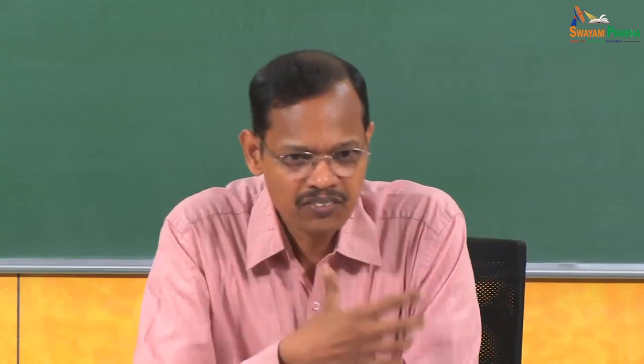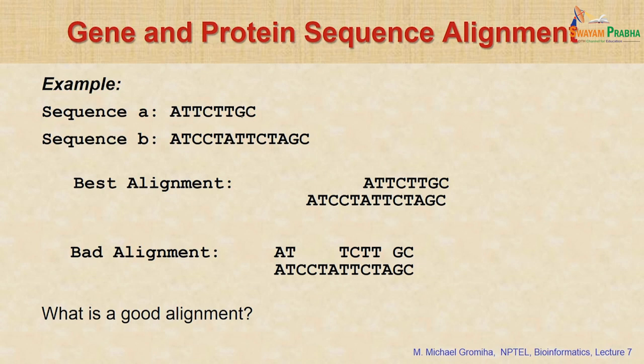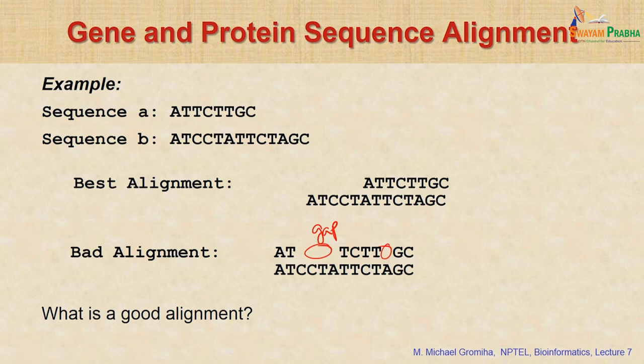For a particular pair of sequences there are various routes. For example, if sequence A has 3, 6, or 8 nucleotides and sequence B is longer, there are different ways to align. One way is to put everything to the right side. Another way is to introduce gaps in between. The question is which one is the best alignment — the first places residues together, the second places aligned residues with gaps between mismatched positions.